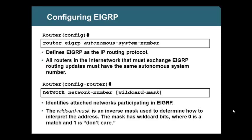Next is the wildcard mask — why do we need it? Before that, the autonomous system number must be the same in order to accept a neighbor and share route updates with a neighbor. That's very important. Without that, exchange of route information is not possible. Forming a neighbor itself is not possible when the autonomous system number mismatches. Only when the neighbor establishes, sharing of route updates will be possible.